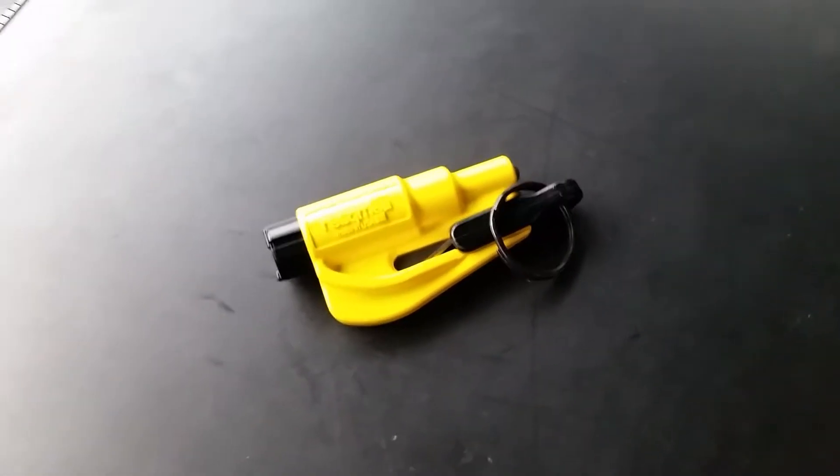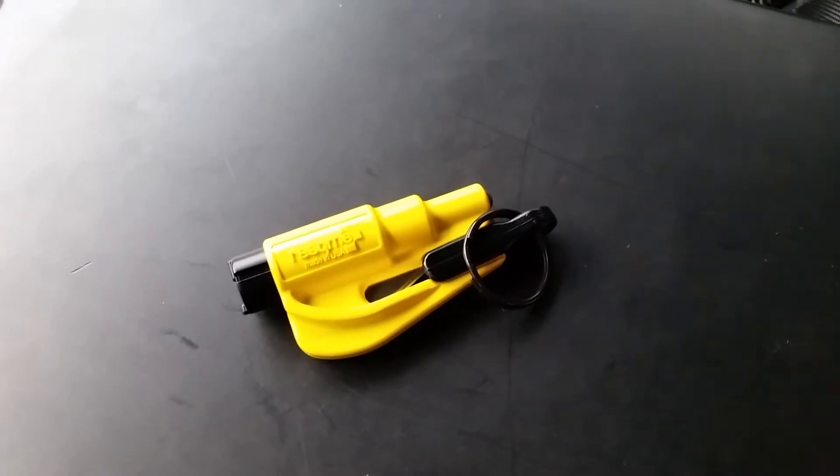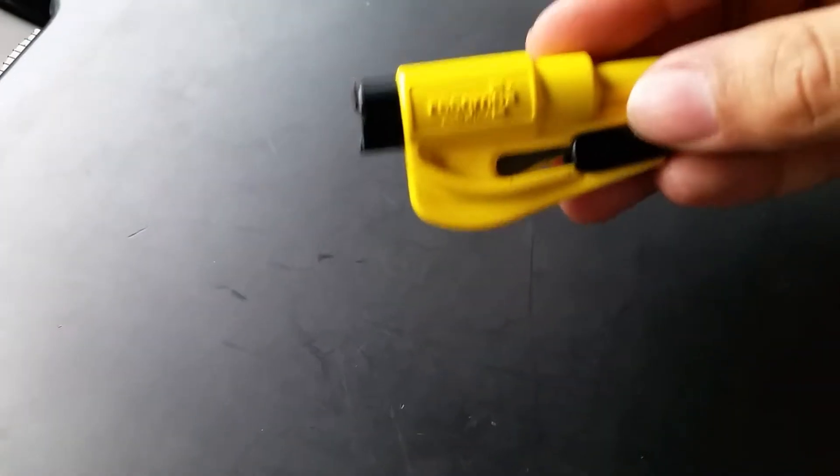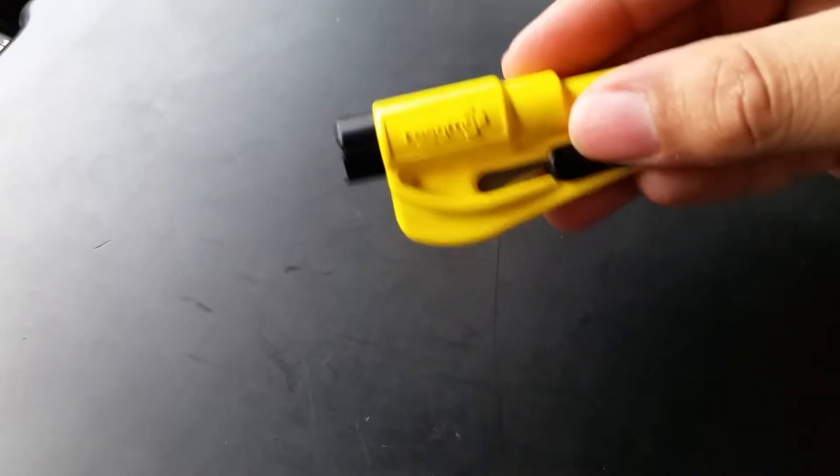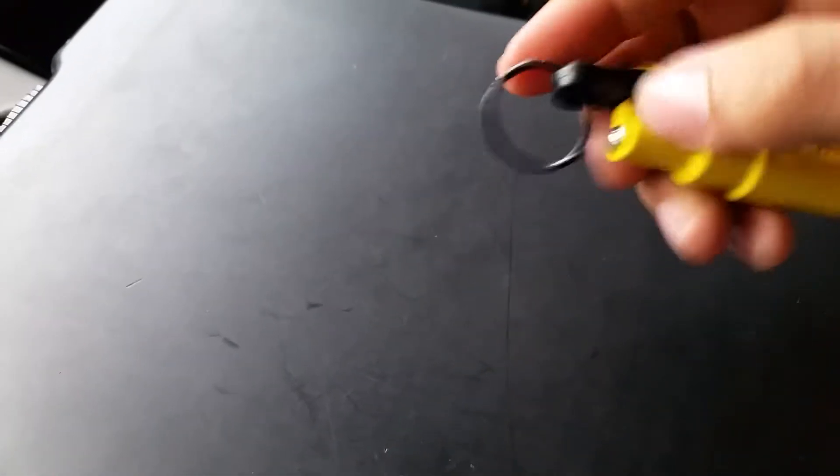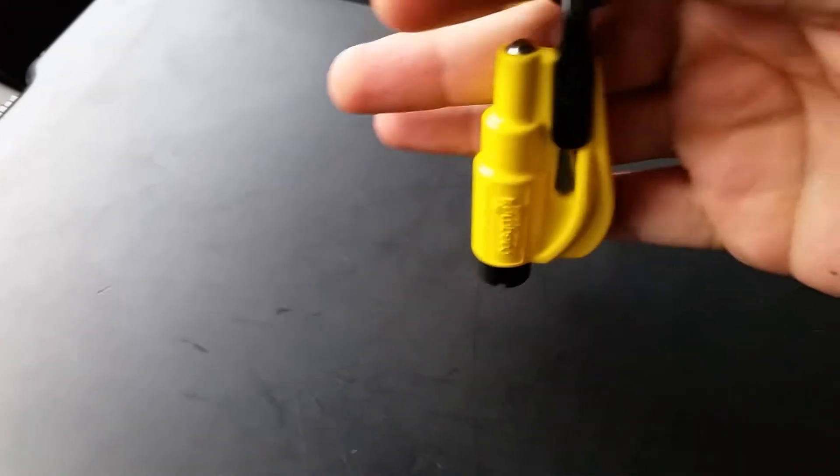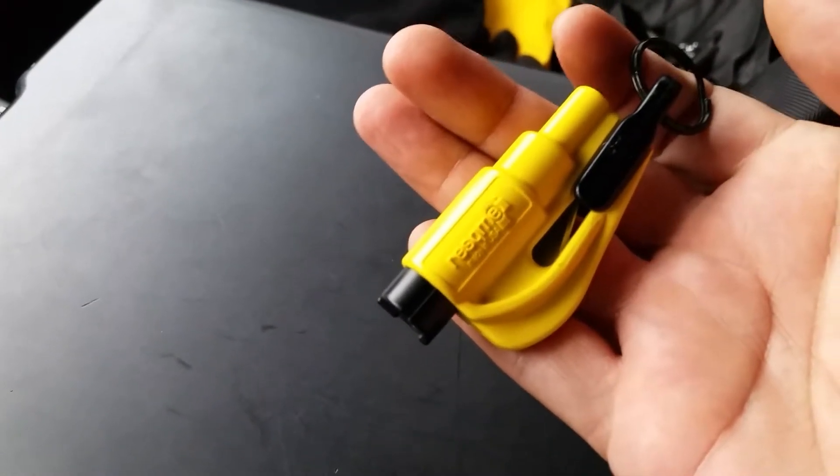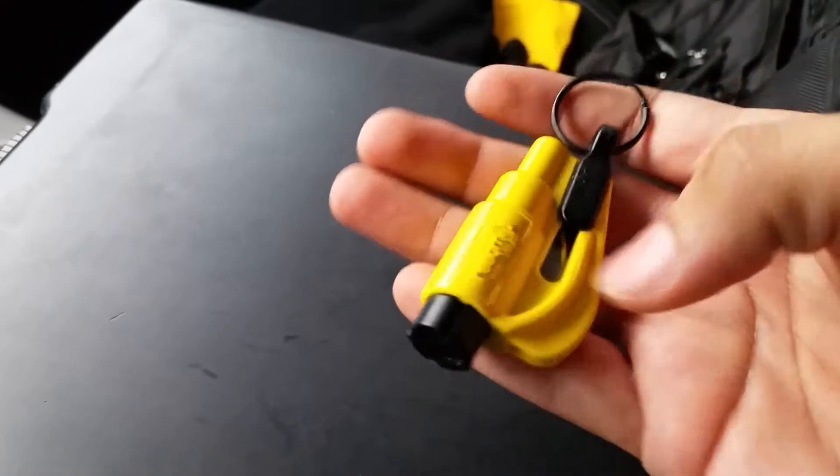Okay everybody, this is California Gun Swag. Just a quick short video to show you this little tool I have called a Rescue Me tool. It goes on a keychain or a zipper, jacket or whatever. It's good to keep in your personal vehicle or your patrol car.